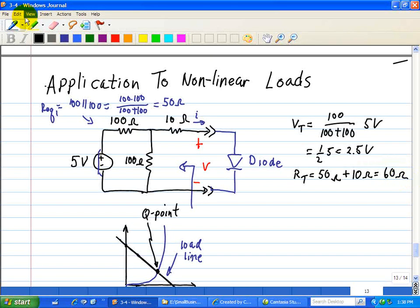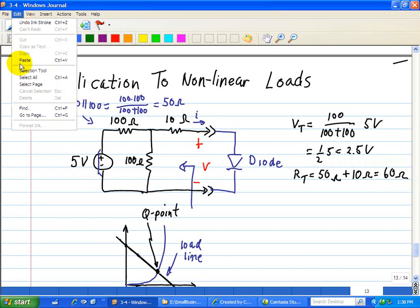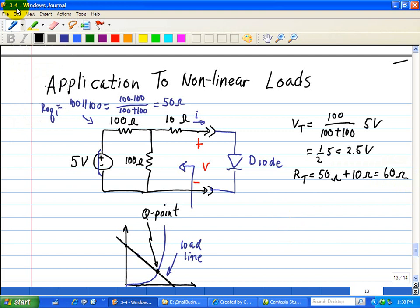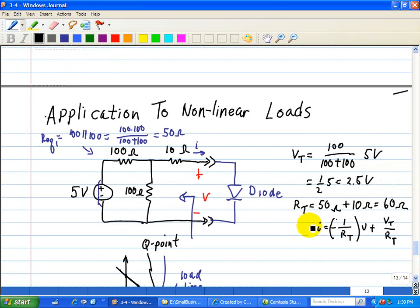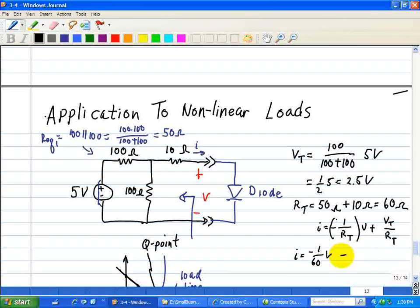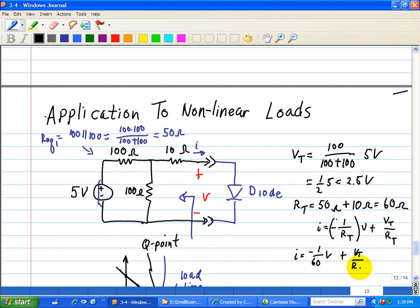Now let me just paste in the equation for a Thevenin equivalent, for the IV characteristics. Now we compare and substitute the values with this equation, and we have I equals negative 1 over 60V plus Vt over Rt.